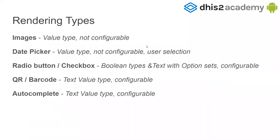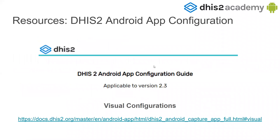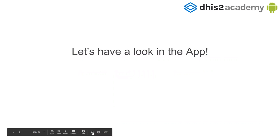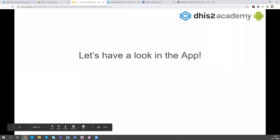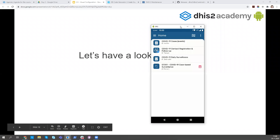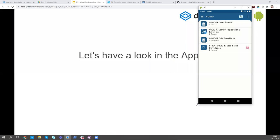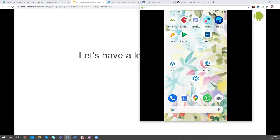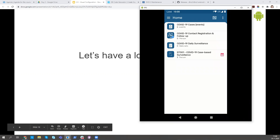That's a summary of what I've covered on visual configurations. There's a link to the documentation explaining all these settings. Let's have a look in the app. You can see the app is blue and this is the training icon.